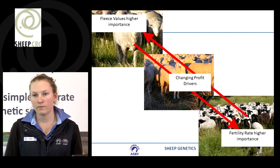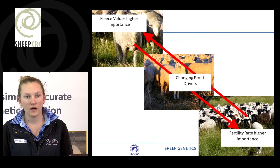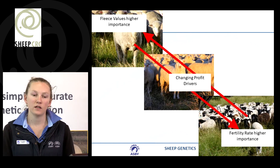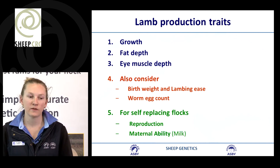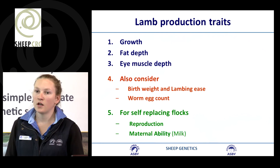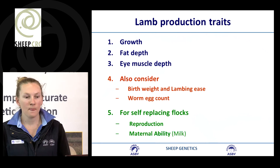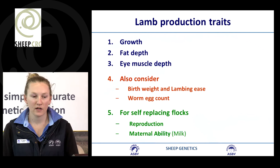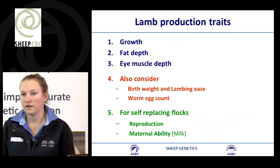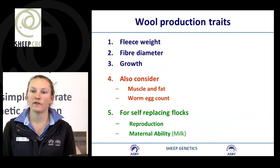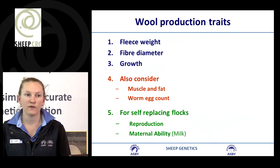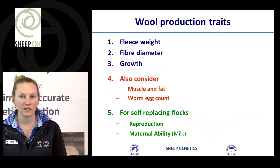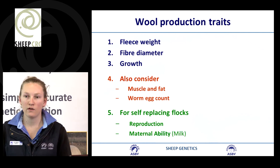Different production systems have different profit drivers. A fleece production business would focus on fleece traits, while a self-replacing shedding flock where wool isn't important would focus more on fertility and carcass traits. For a lamb production system, the three major traits impacting profit are growth, fat, and eye muscle, though worm egg count and fertility also matter depending on environment and whether it's a self-replacing flock. For a wool production system, the focus shifts to fibre diameter, fleece weight, muscle and fat, worm egg count, and fertility.